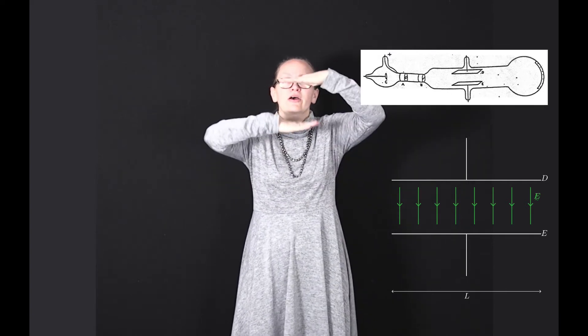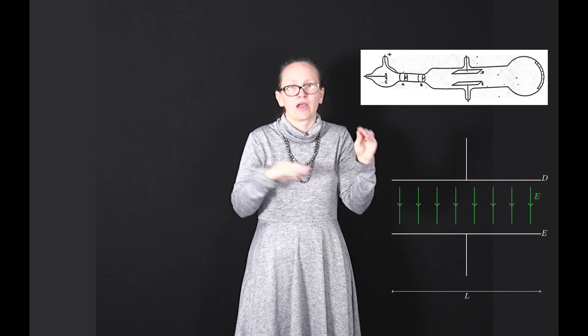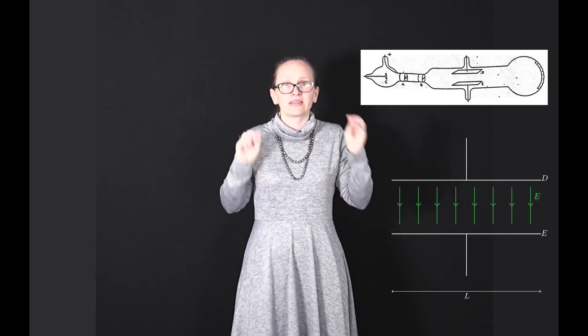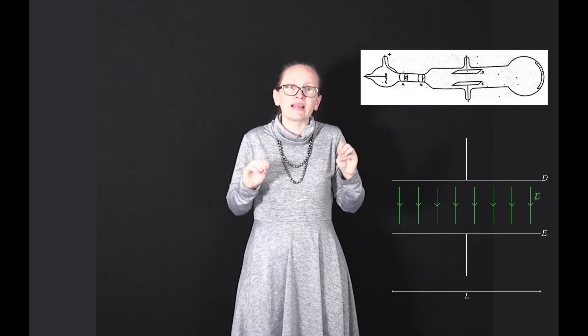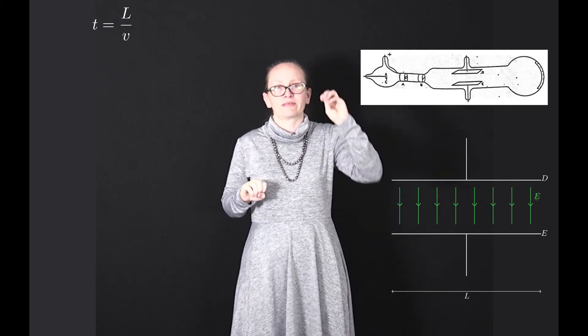Suppose that the electrons are entering the distance between the plates with a horizontal velocity given by v. We'll assume that the plates have a length L. Then the time spent between the plates is going to be given by t equals L divided by v.